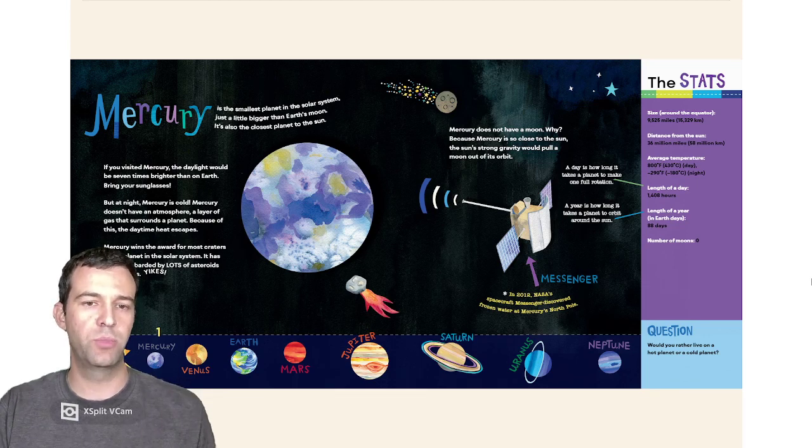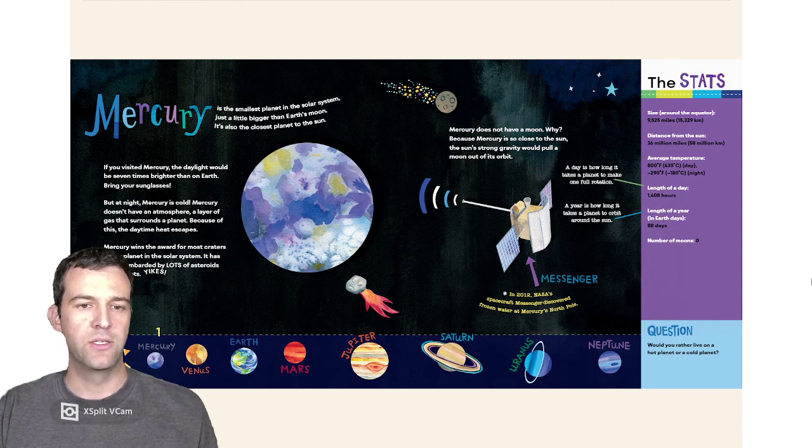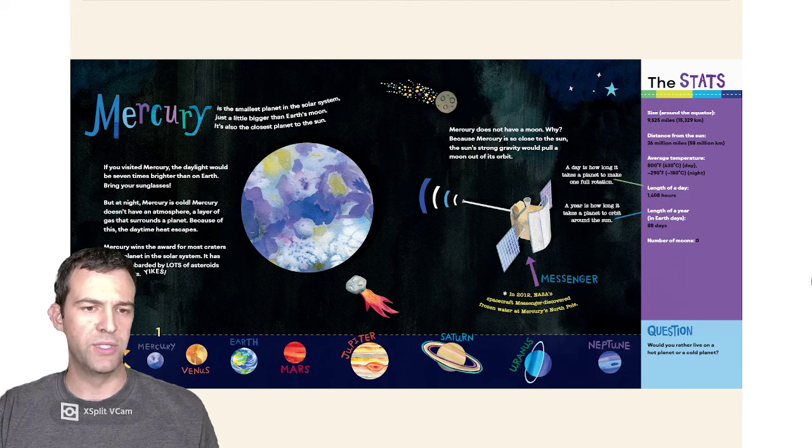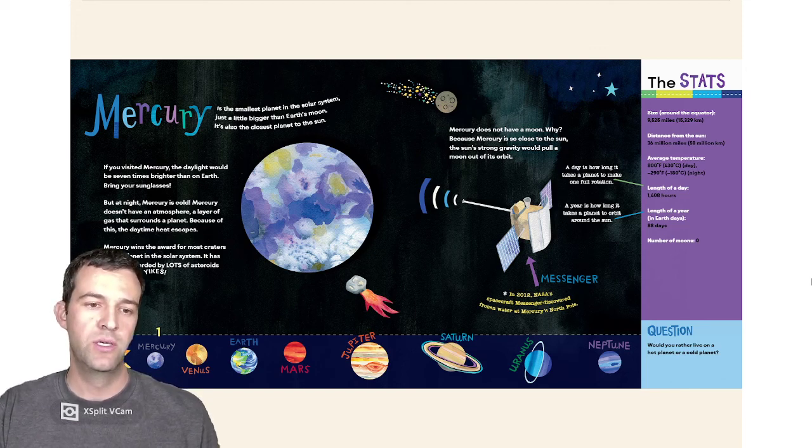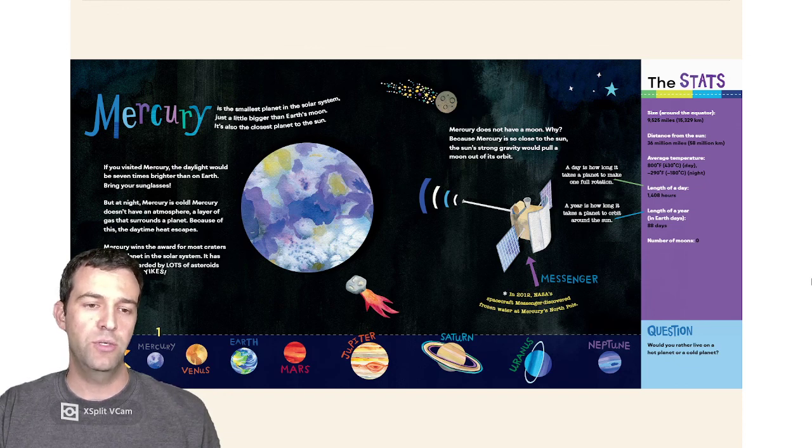Mercury is the smallest planet in the solar system, just a little bigger than Earth's Moon. It's also the closest planet to the Sun. If you visited Mercury, the daylight would be seven times brighter than on Earth. Bring your sunglasses. But at night, Mercury is cold.